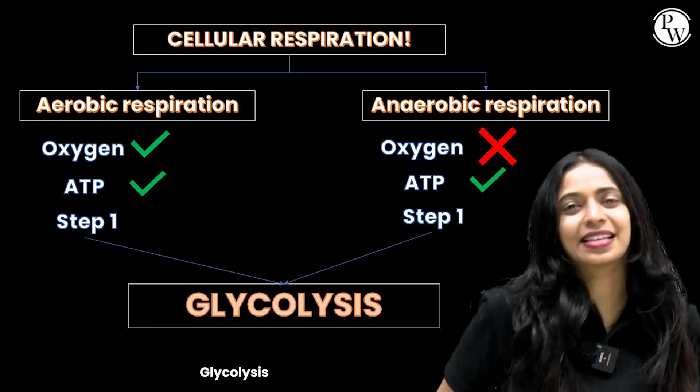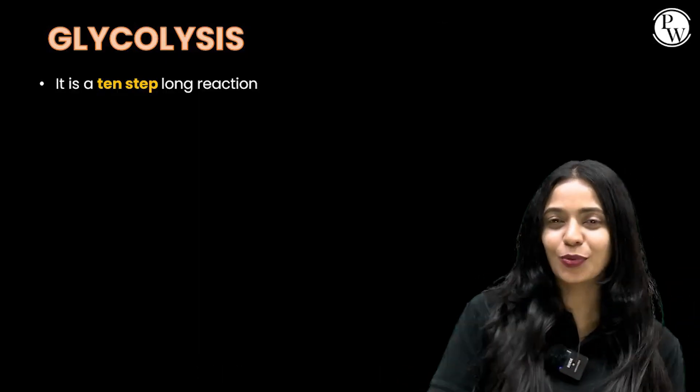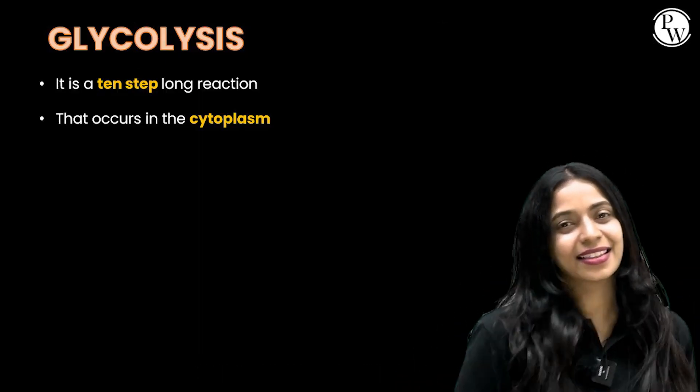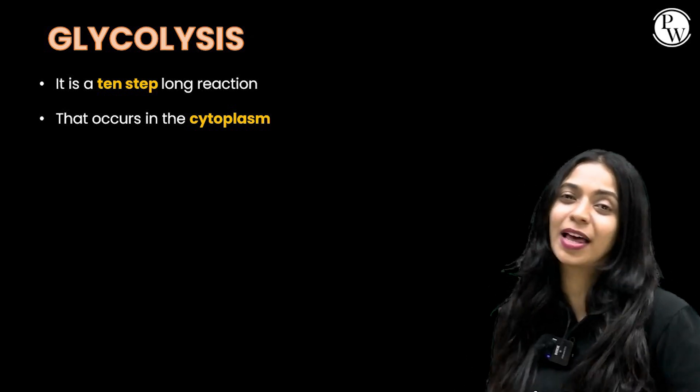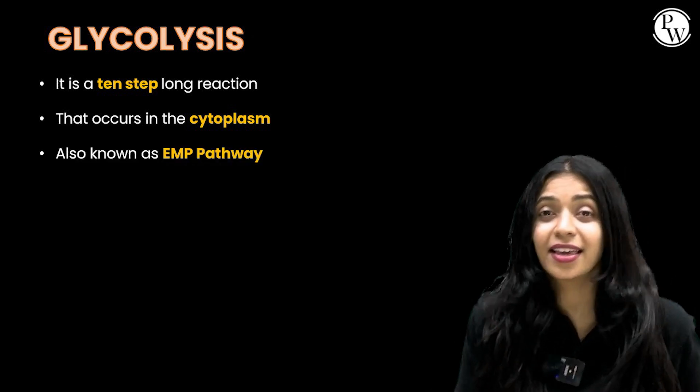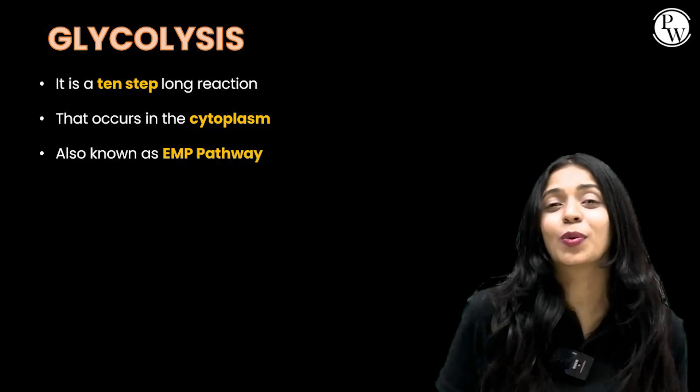Glycolysis — it is a 10-step long reaction that occurs in the cytoplasm, also known as the EMP pathway.